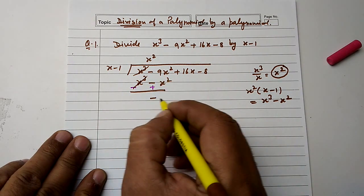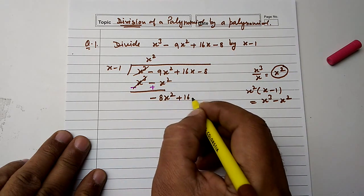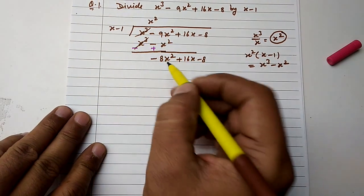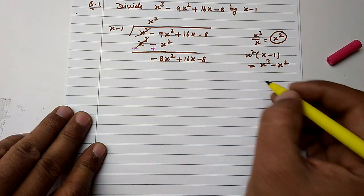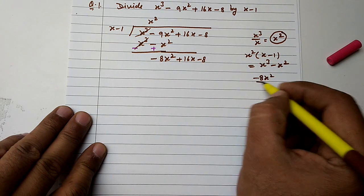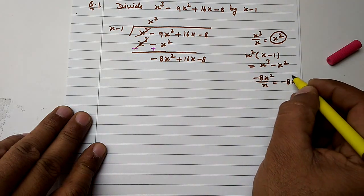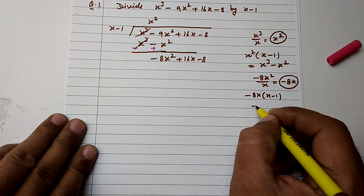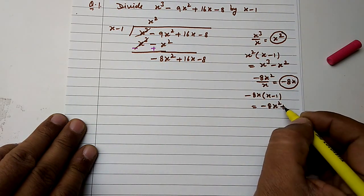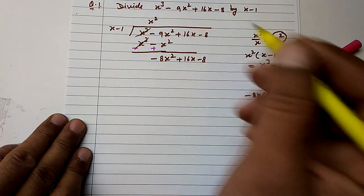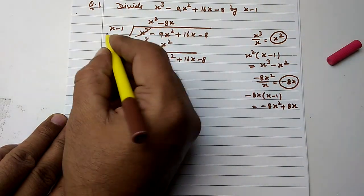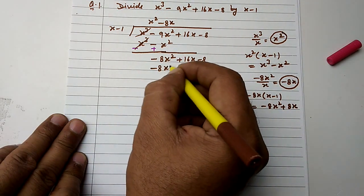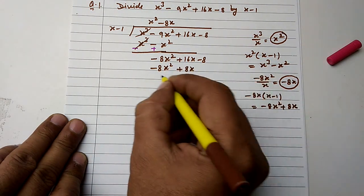We have negative 9 and positive 1, so negative 9 plus 1 gives minus 8x squared plus 16x minus 8. We multiply minus 8x by x minus 1, giving minus 8x squared plus 8x.